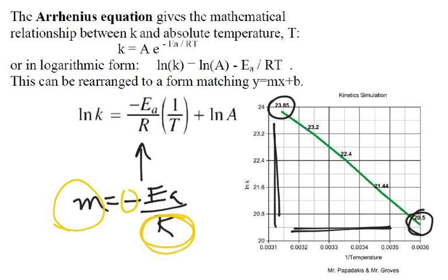And then whatever we have left here, so I'm going to take my slope, multiply by r, change the sign, and that will give me my activation energy, which is the last thing I want to do in this simulation.